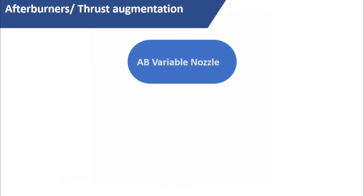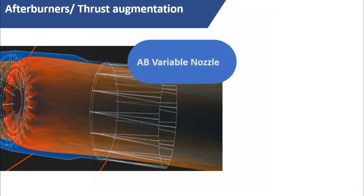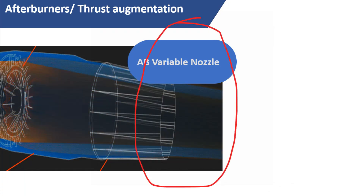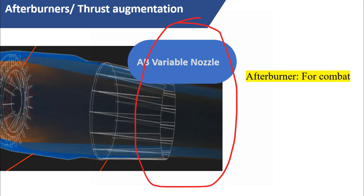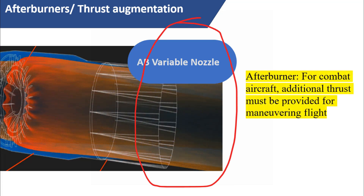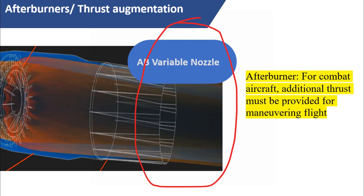In some cases, it becomes necessary to increase an engine's thrust beyond its normal level. This can be required for taking off from shorter runways, on hot days, or for maneuvering in combat aircraft. Additional thrust can be provided by extremely high temperatures of the after-burning flame. Burners are arranged to concentrate the flame around the axis of the jet pipe.